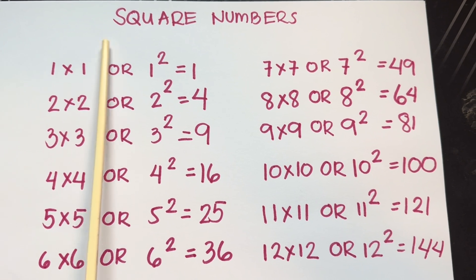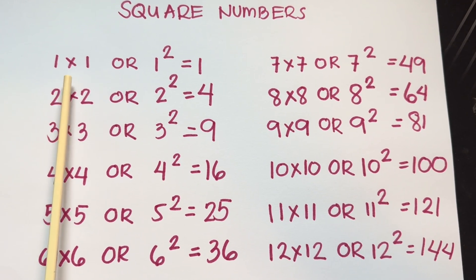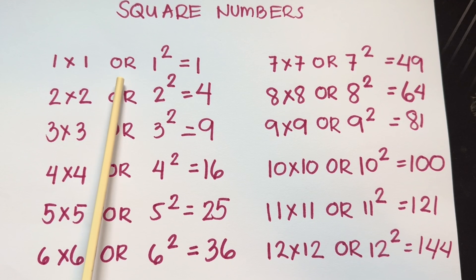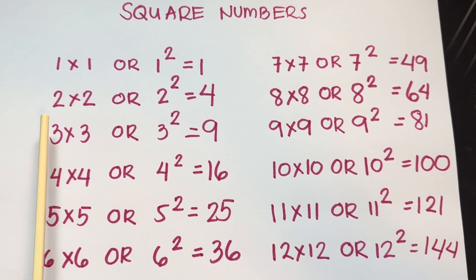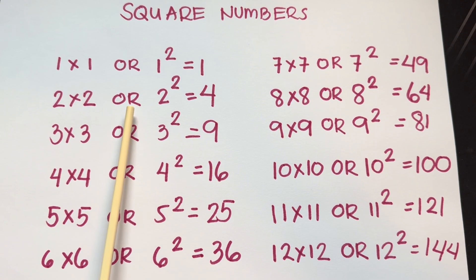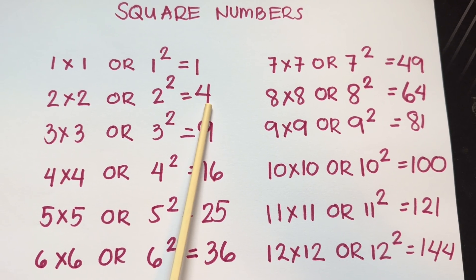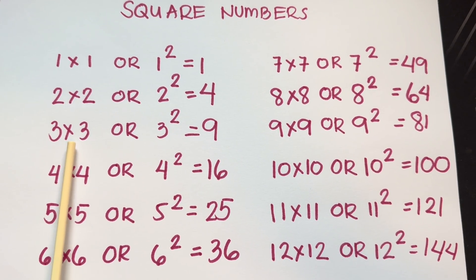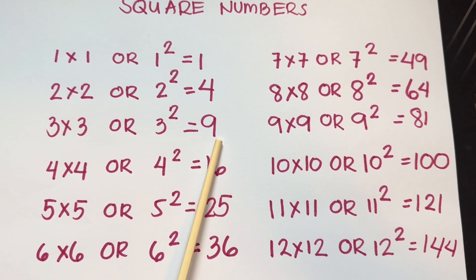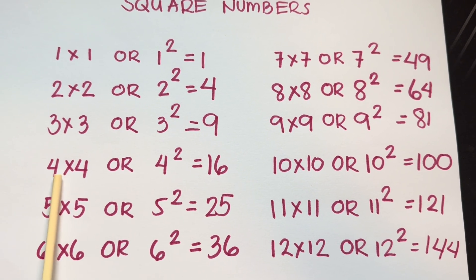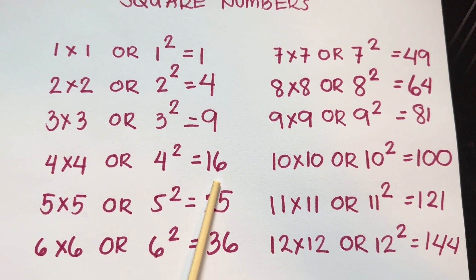Let's do a recap. Square numbers. 1 times 1, or 1 squared, is equals to 1. 2 times 2, or 2 squared, is equals to 4. 3 times 3, or 3 squared, is equals to 9. 4 times 4, or 4 squared, is equals to 16.